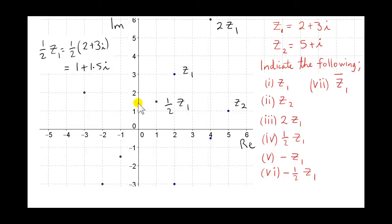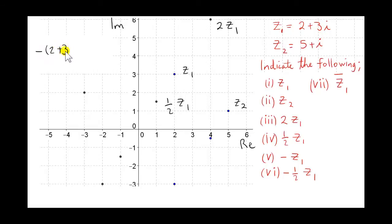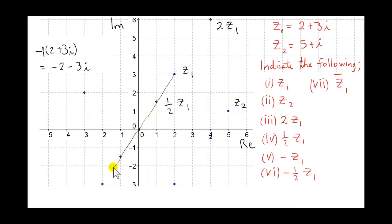What about minus z1? That's the same as multiplying 2 plus 3i by minus 1, giving us minus 2 minus 3i. Geometrically, this is reflecting z1 in the origin — we draw a line from z1 through the origin and mark off the same distance on the other side. The real part is minus 2 and the imaginary part is minus 3.